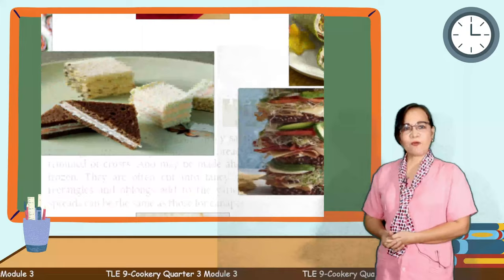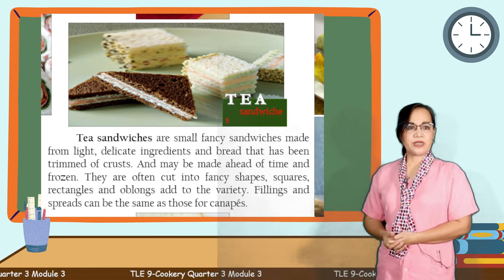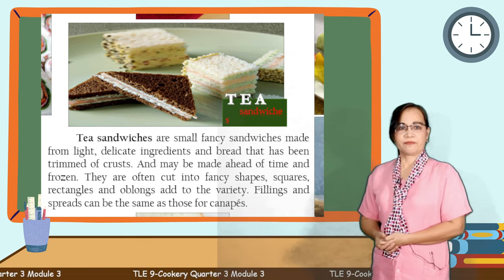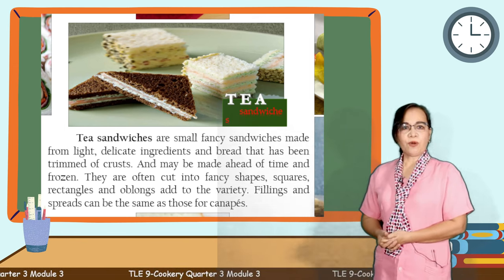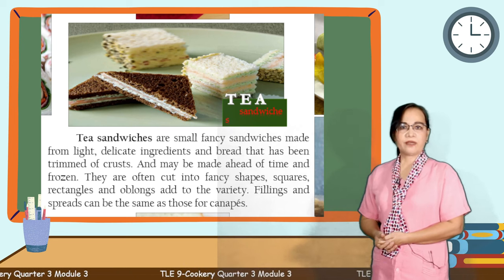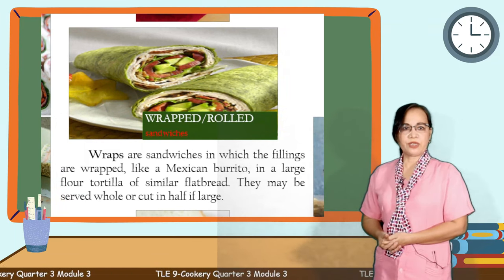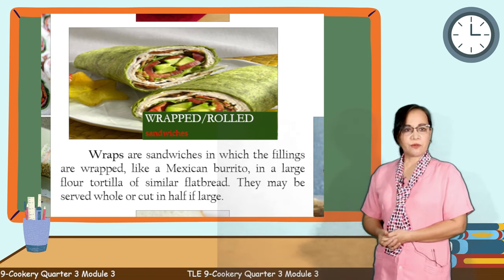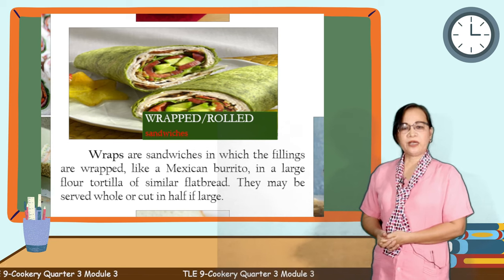Next, multi-decker sandwiches are made with more than two slices of bread with several ingredients in the filling. The Clubhouse Sandwich is a popular multi-decker sandwich made of three slices of bread filled with sliced chicken, mayonnaise, lettuce, tomato, and bacon, and cut into four triangles. Number five, tea sandwiches are small fancy sandwiches made from light, delicate ingredients, and bread that has been trimmed of crust, and may be made ahead of time and frozen. They are often cut into fancy shapes. The last type of cold sandwich is the wrapped or rolled sandwich, in which the fillings are wrapped like a Mexican burrito in a large flour tortilla or similar flat bread. They may be served whole or cut in half if large.